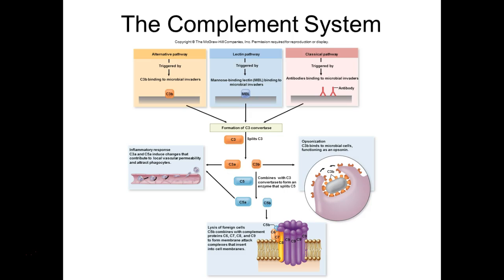It's called the 'classical' because the antibody-mediated way of activating complement was discovered first. The alternative pathway was discovered second. But if it's the very first time we've ever seen a pathogen, it's going to be the alternative pathway of complement that gets activated, not the classical. This is because C3 is always being broken into C3A and C3B. If C3B binds, that keeps the activation going — splitting more C3, and then eventually splitting C5 into its components.